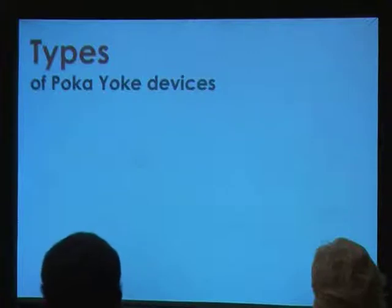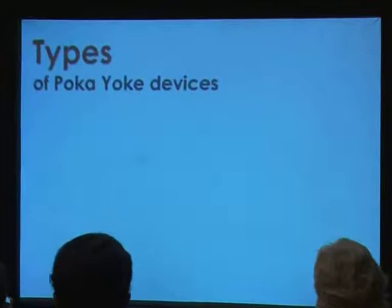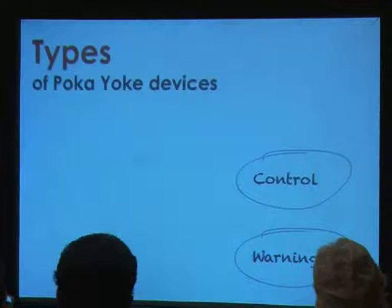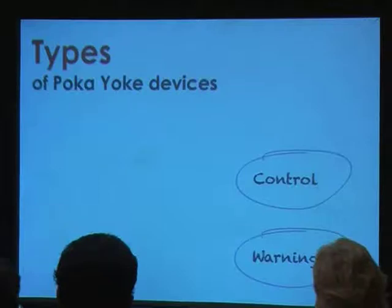Before we get into examples, let me quickly classify the two types of Pokayokes that exist, and once you see them, you will be able to start connecting the dots. There are two types of Pokayoke devices. The first is called Control Pokayoke, and the second is called Warning Pokayoke. In a Control Pokayoke, the process is designed in such a manner that you would not be able to make a mistake — you go through the process step by step without even realizing it, and you get the right thing done. There is no chance of an error occurring.